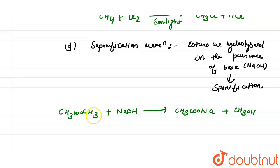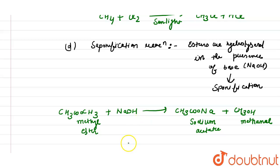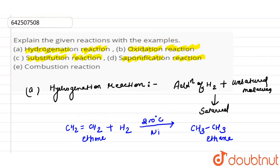Saponification is the hydrolysis of an ester under acidic or basic conditions to form alcohol or the salt of carboxylic acid. Here, methyl ester in the presence of base gives sodium acetate (the carboxylic salt) and methanol (the alcohol). Saponification is commonly used to refer to the reaction of a metal alkali with fat or oil to form soap.